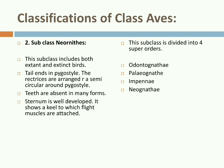Subclass Neornithes is divided into four super-orders: Odontognathae, Palaeognathae, Impennae, and Neognathae. Odontognathae are extinct birds that were alive in the Cretaceous period. They are without a pelvis and possess teeth in jaws. The tail was short. There are no living species. Odontognathae is divided into two orders: Hesperornithiformes and Ichthyornithiformes — Hesperornis being an example.